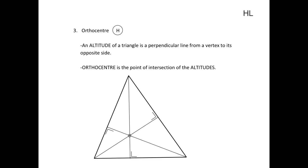Our next concurrency to look at is the orthocenter. The orthocenter is the point of intersection of the altitudes of a triangle. Now an altitude of a triangle is a perpendicular line from a vertex to its opposite side.